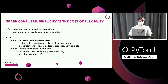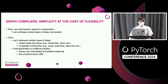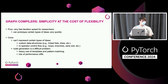Graph compilers take the reverse approach — they're very simple, but that comes at the cost of some flexibility. The large advantage is they offer very fast iteration speeds for researchers; if you have a new idea you can prototype it super quickly. On the other hand, there are many ideas you might not be able to represent in graph compilers, like custom data structures, or control flow inside a matmul, which is very hard to represent efficiently.